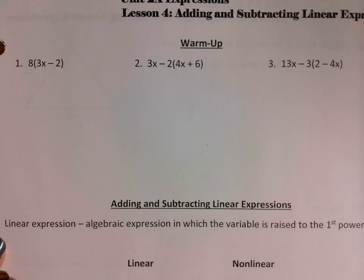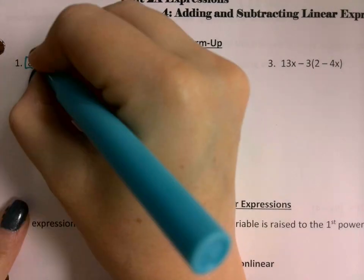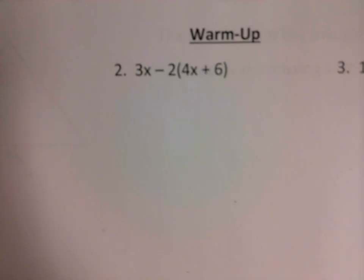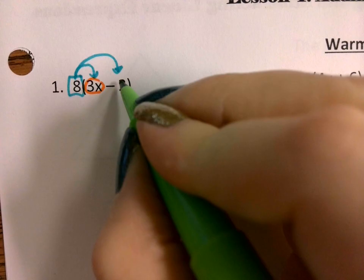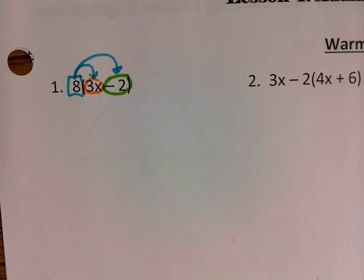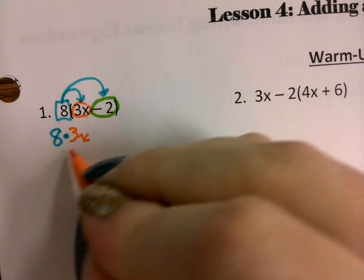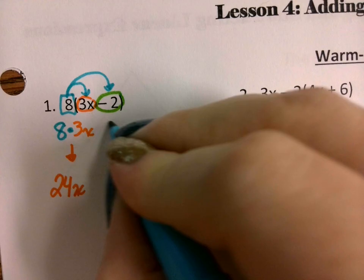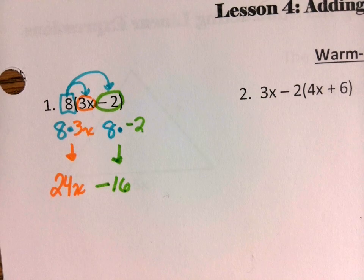Remember, last week on Friday we learned that the distributive property says we are going to take whatever is on the outside and distribute it to each of the components or expression parts on the inside — to each of the terms. We have the term 3x and the term negative 2. So we're going to multiply 8 times 3x, which gives us 24x, and then 8 times negative 2, which comes out to negative 16. So there's our final answer.